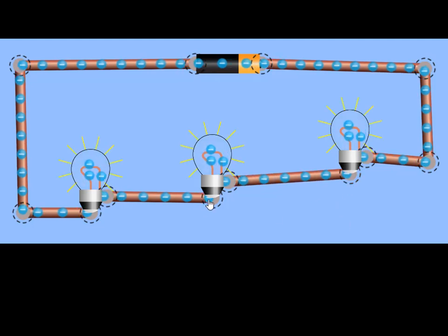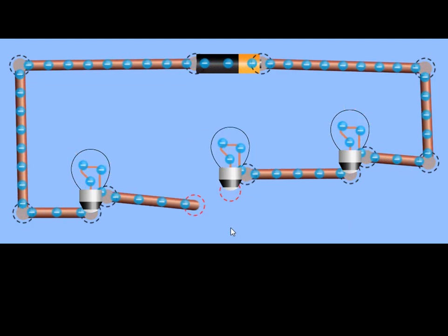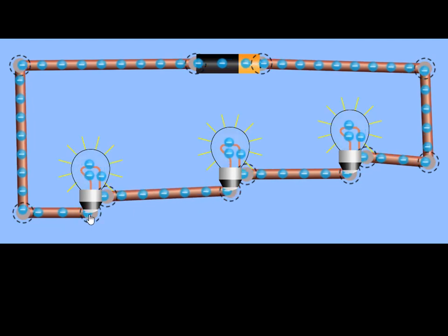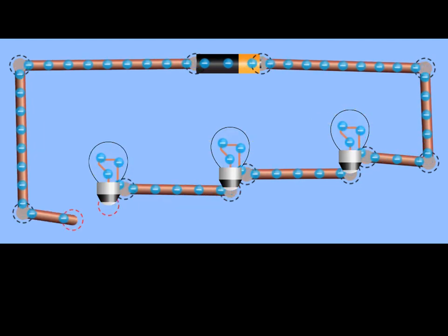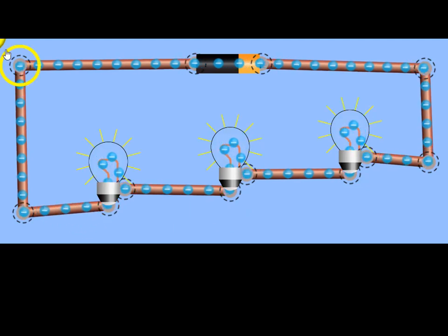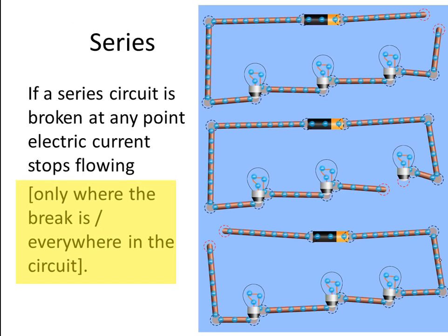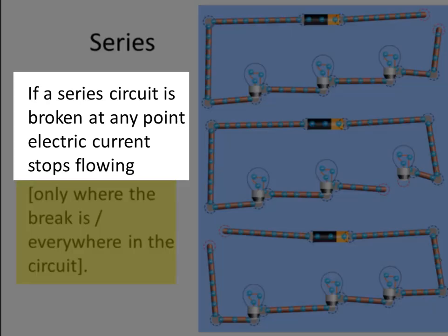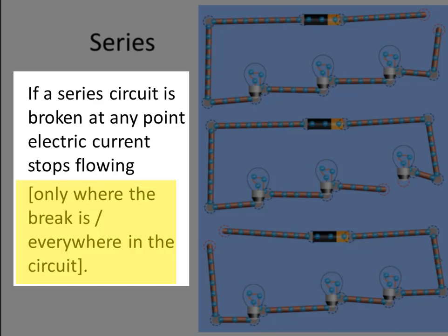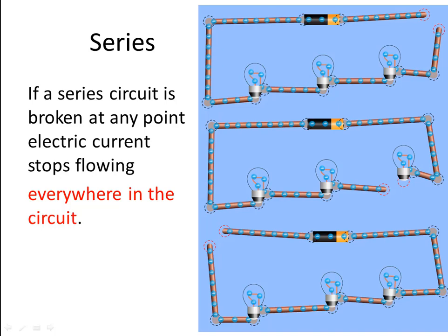Reconnect — all the bulbs on. Break between the next two: all the bulbs go off. Reconnect, they all come on. Break closer to the negative terminal: all the bulbs go off. Reconnect, break even closer to the negative terminal: all the bulbs off. Reconnect — all the bulbs shine. So: if a series circuit is broken at any point, electric current stops flowing everywhere in the circuit. It doesn't matter where you break a series circuit — current stops flowing everywhere and all the bulbs go out.